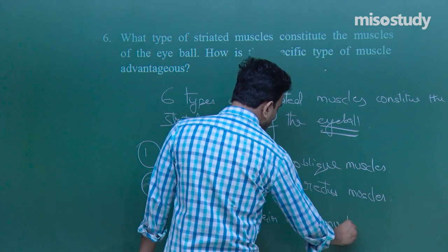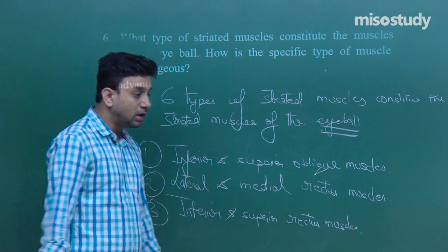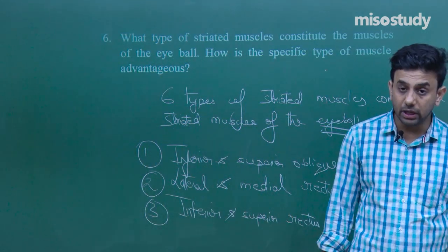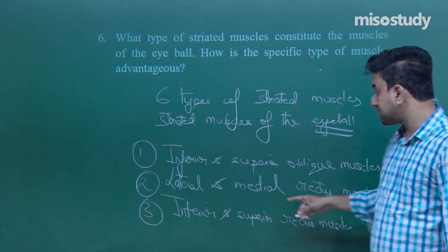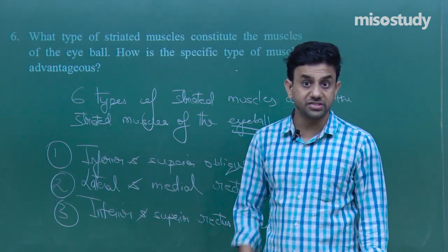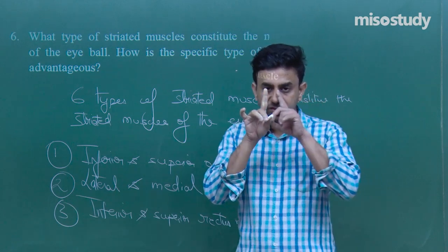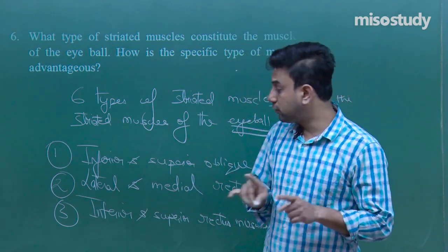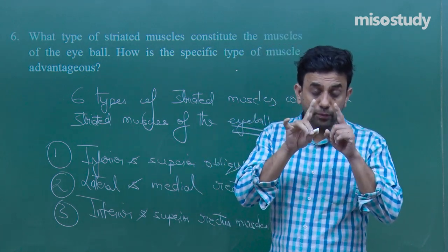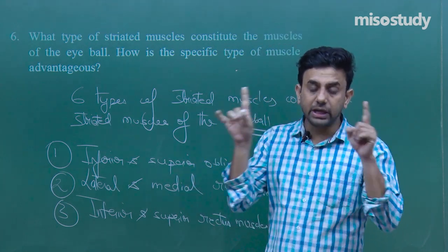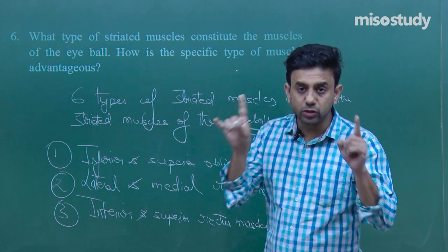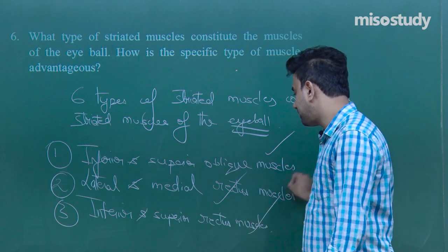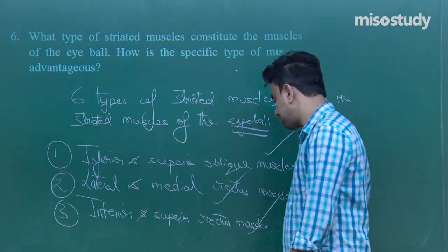These six muscles are striated, meaning they are under our voluntary control. For example, the medial rectus moves the eyeball towards the medial side — towards the inner canthus of the eye — while the lateral rectus moves the eyeball away from the inner canthus, towards the outer canthus.